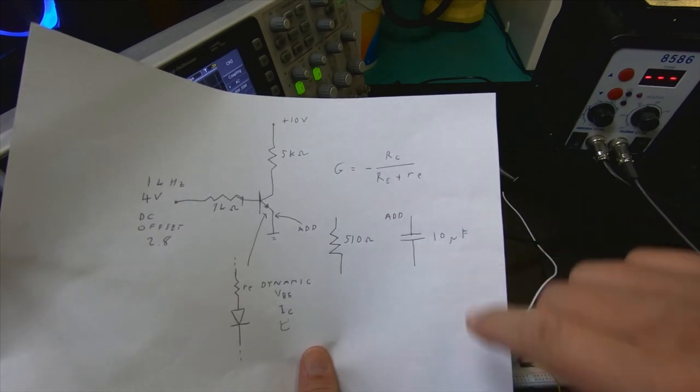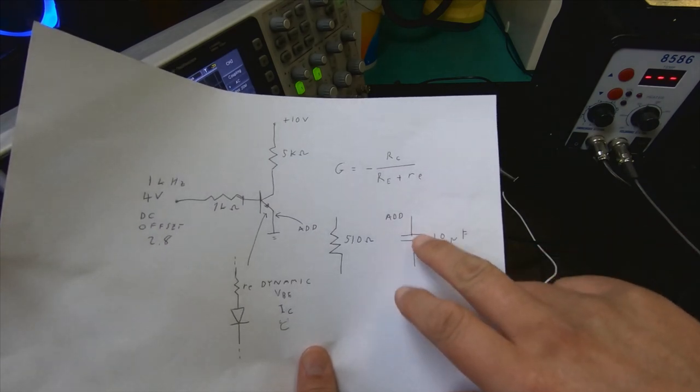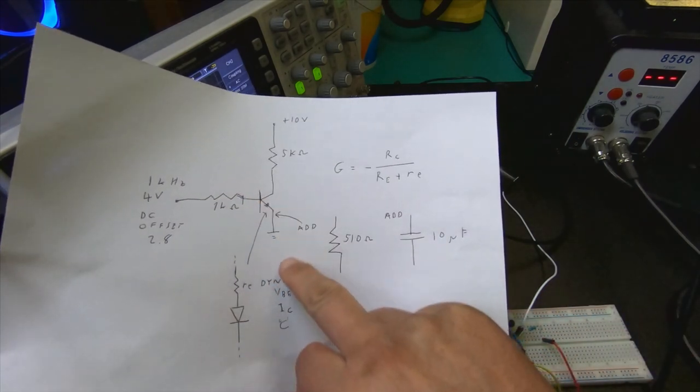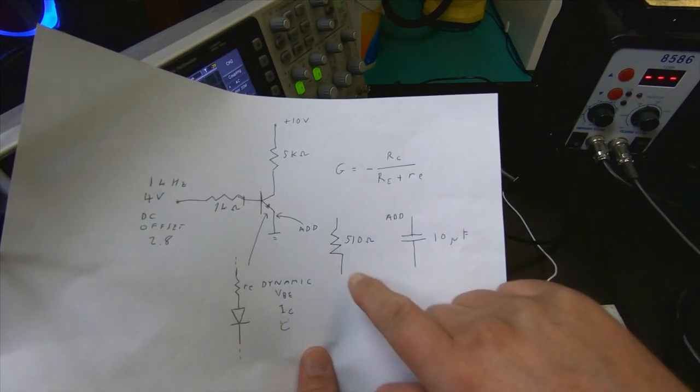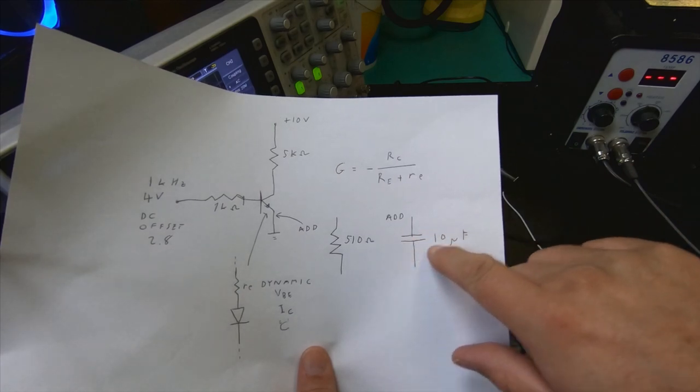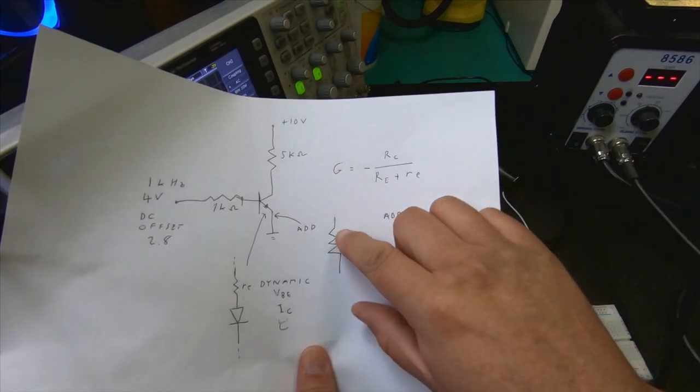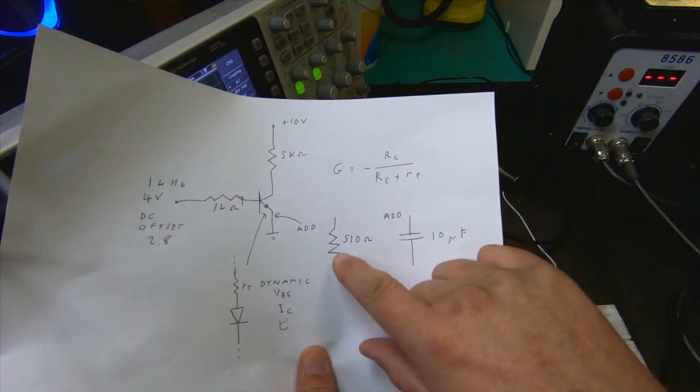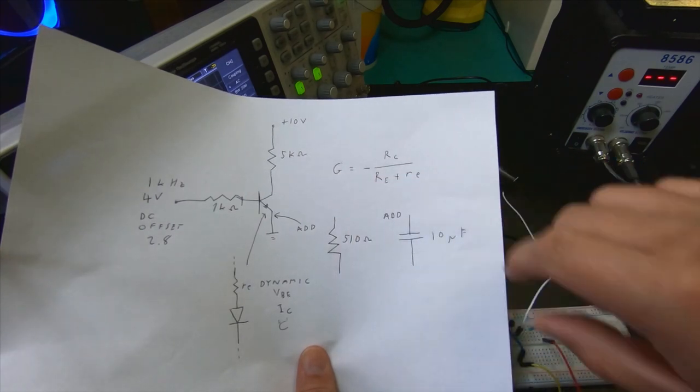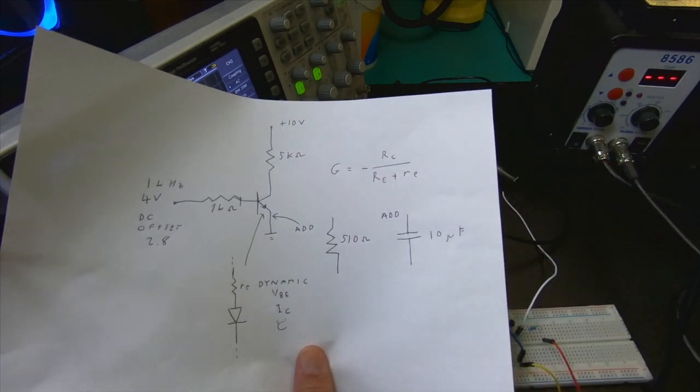And what this does is that basically you get low impedance where you actually have the signal, and then it has two effects that increases the gain that you get, plus it gives a little bit more temperature stabilization.